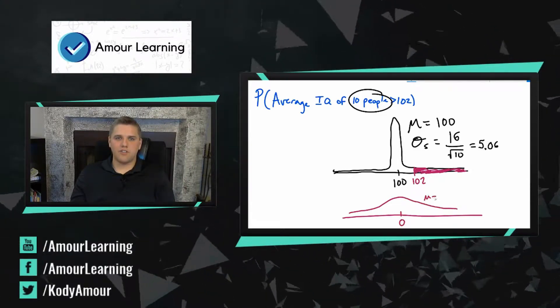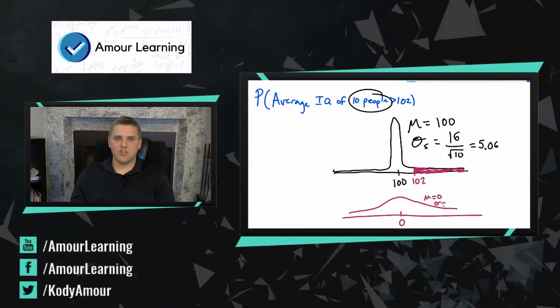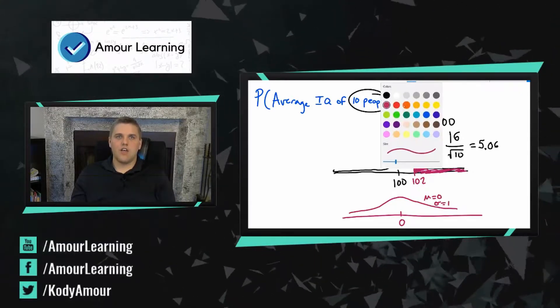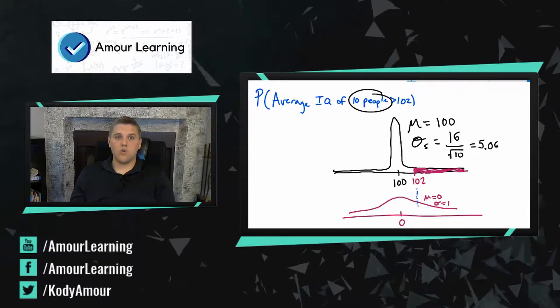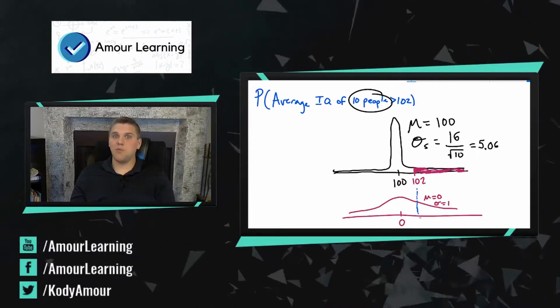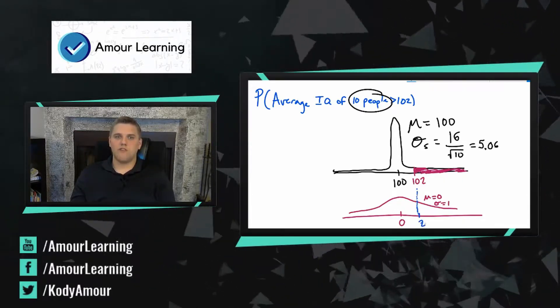Here we have zero. Our average is zero. Our standard deviation is one and we're trying to find the corresponding z-score to an IQ, an average IQ of 10 people being 102. So we're trying to find that z-score.